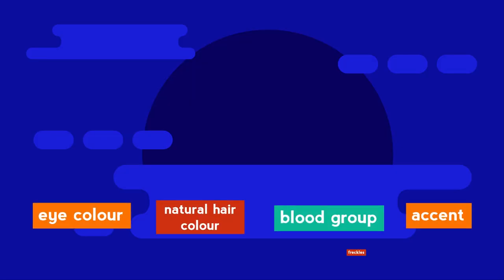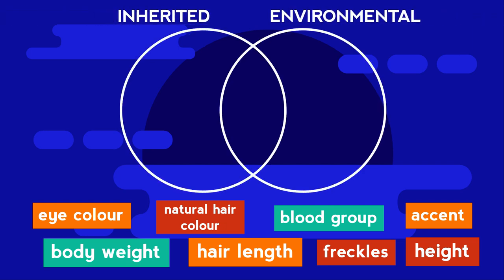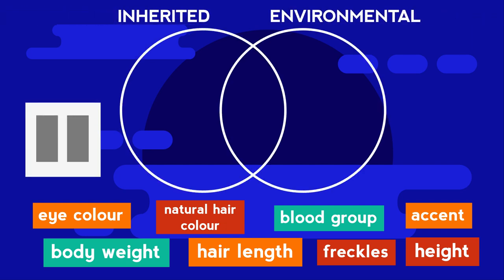Can you decide if each of these characteristics is controlled by inherited characteristics, the environment, or both? Where would each go on a Venn diagram? Pause the video while you think.